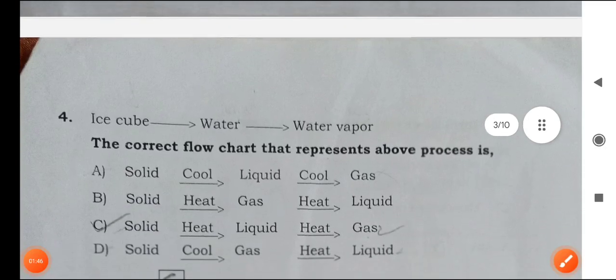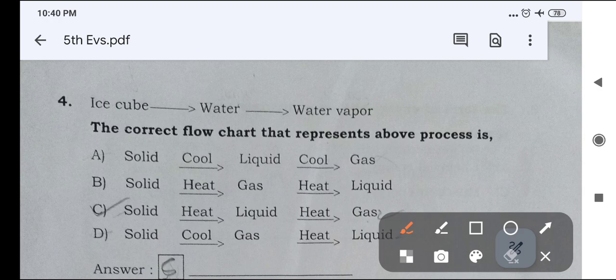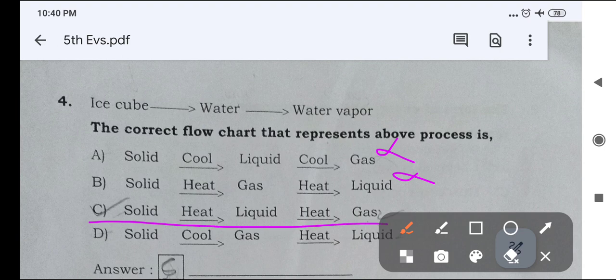Next, fourth question. Ice cube, water, water vapor. Solid, liquid and gas, wrong option. Solid, gas, liquid is wrong option. C is solid, liquid and heat. D is solid, heat, liquid, heat, gas. This is right answer. C is right answer.